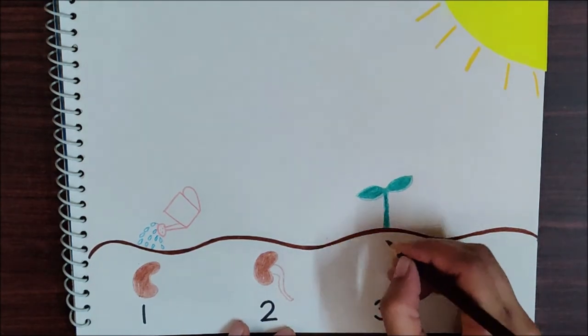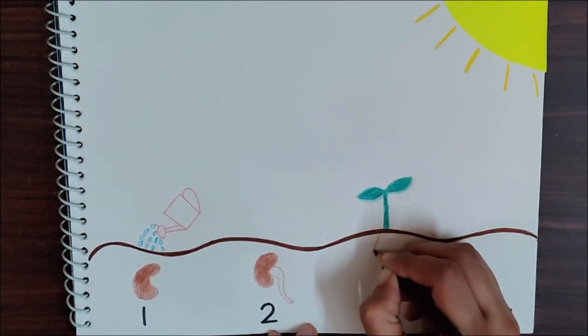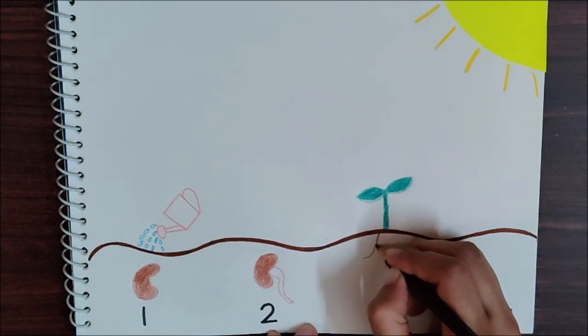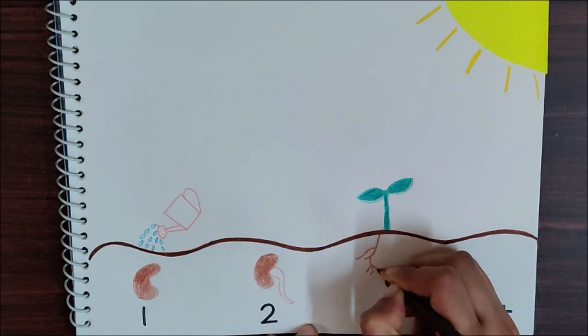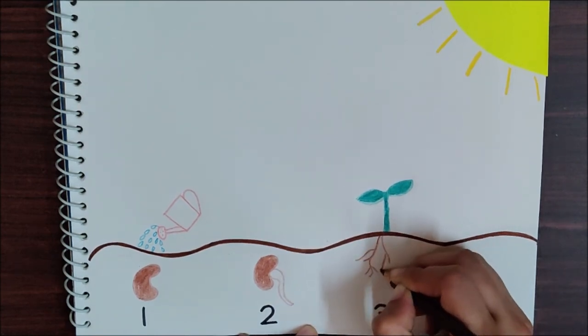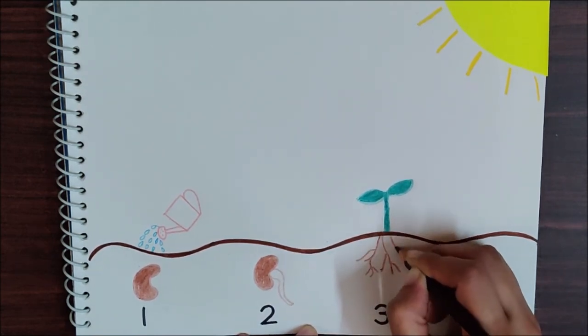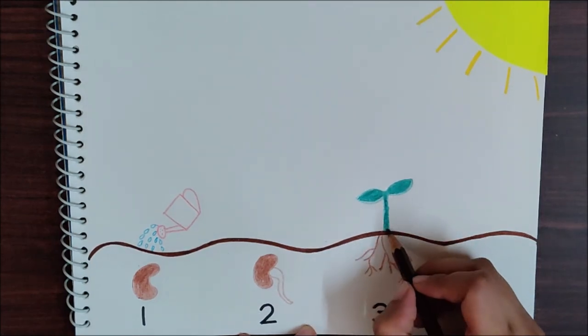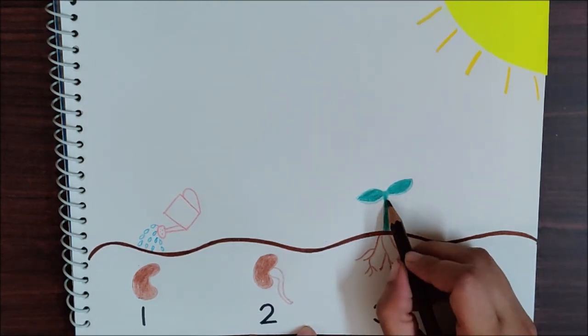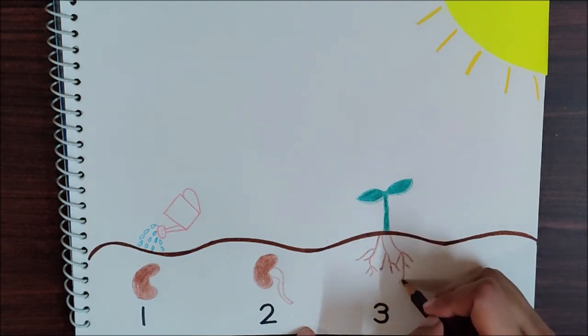And these are the roots. The roots hold the soil tightly. See, so many roots are there. Because of the roots, the plant stands straight. If there are no roots, then the plant will fall.